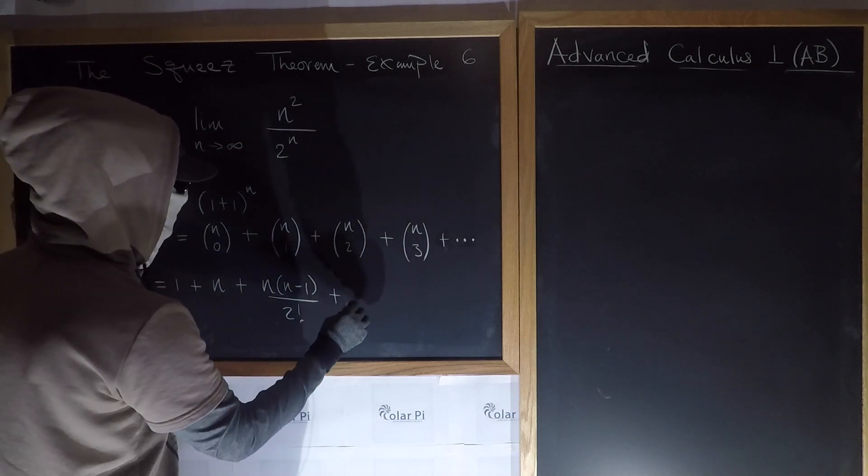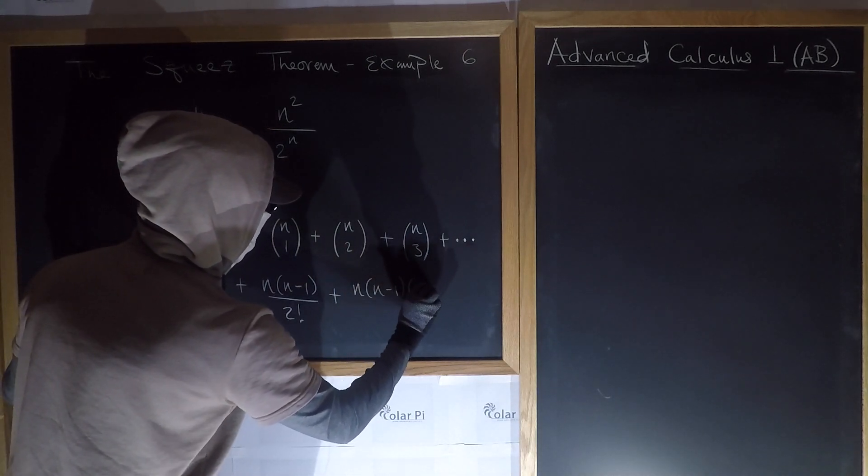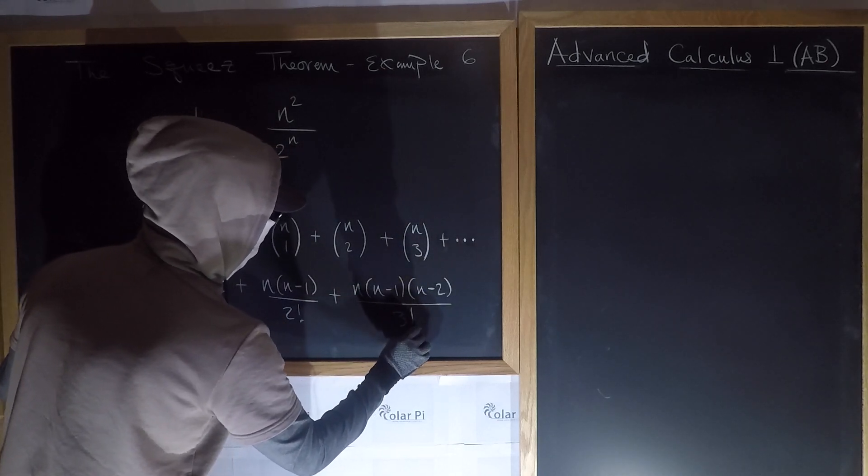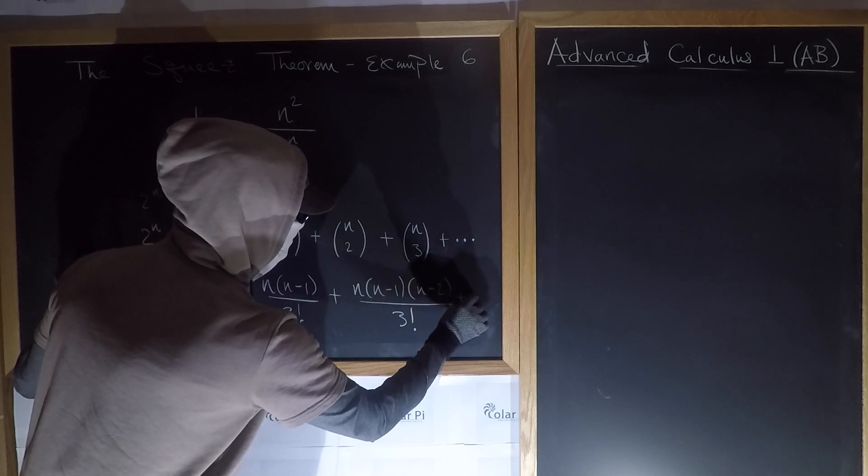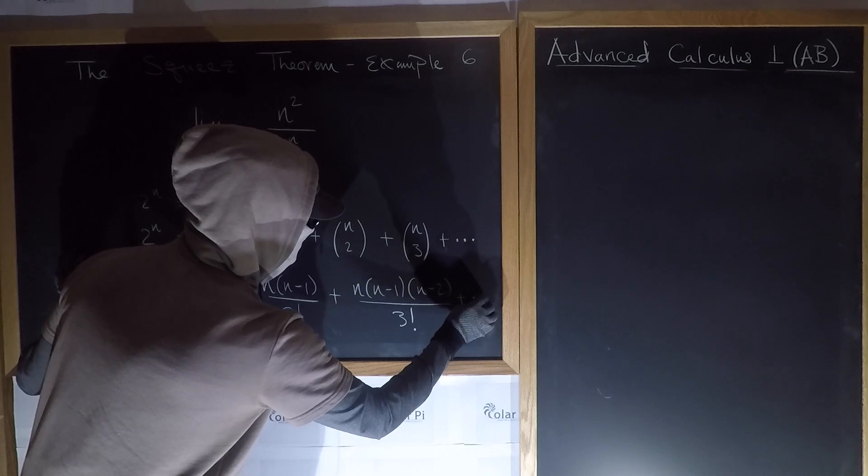this guy also we worked with an example for, and it's going to be n times n minus 1 over 2 factorial, and then plus, this guy here is going to be n times n minus 1 times n minus 2, all over 3 factorial, and of course more terms, so plus dot dot dot.